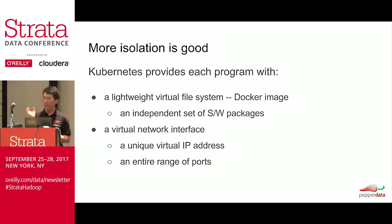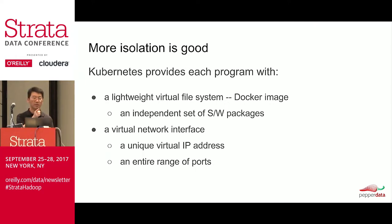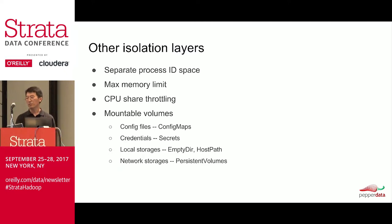Containers solve this problem fundamentally. They create more isolation layers between programs using virtualization technologies that virtual machines are based on. But unlike virtual machines, containers are still very fast because they picked a specific set of technologies that are efficient and lightweight. First, each program gets a virtual file system that contains an independent set of software packages — better known as Docker images. This way, another person can install new packages only on his container without affecting your program at all. Kubernetes also gives each program a virtual network interface with a unique virtual IP address, so both your Tomcat and their Tomcat can open the same port under different IP addresses. There are also other isolation layers around separate process ID space, maximum memory and CPU limits. You can also mount external data as volumes on your containers using various Kubernetes mechanisms, like credentials using Kubernetes secrets volume or local storage using the host path volume.